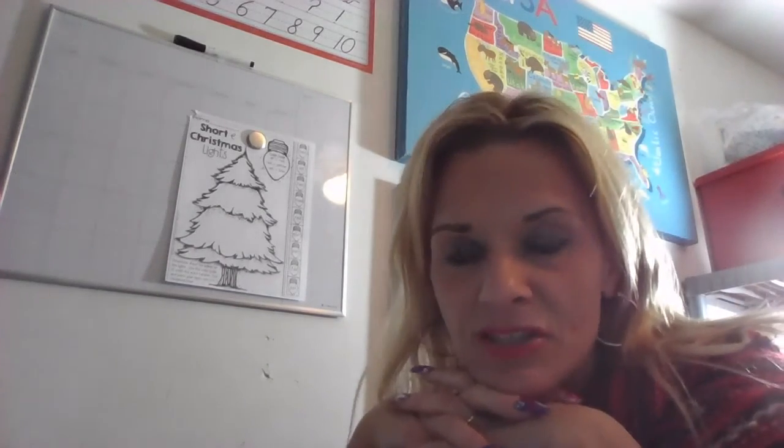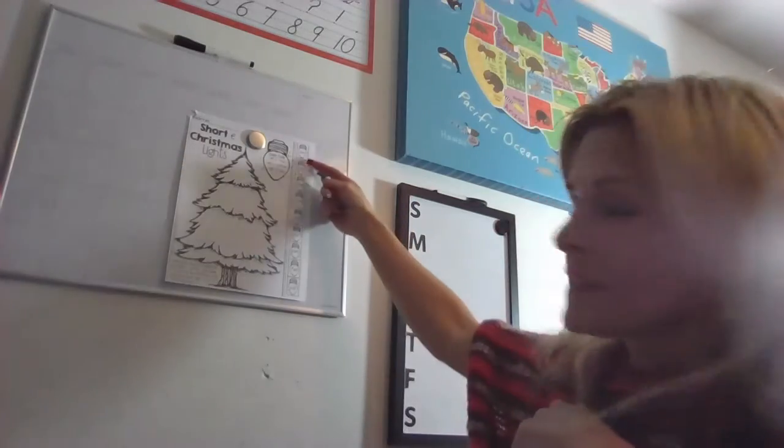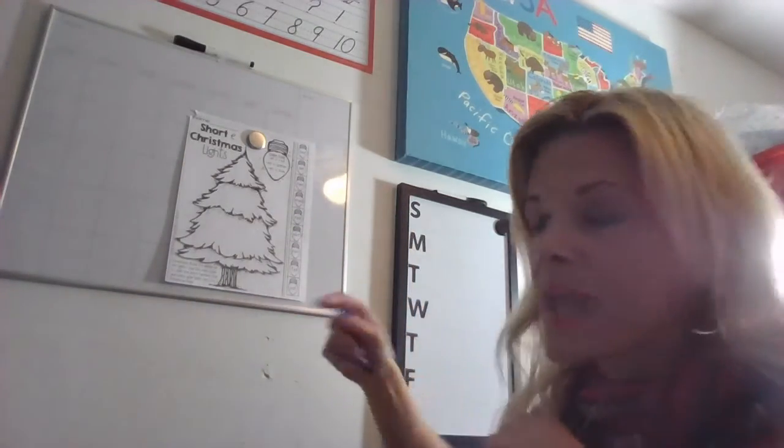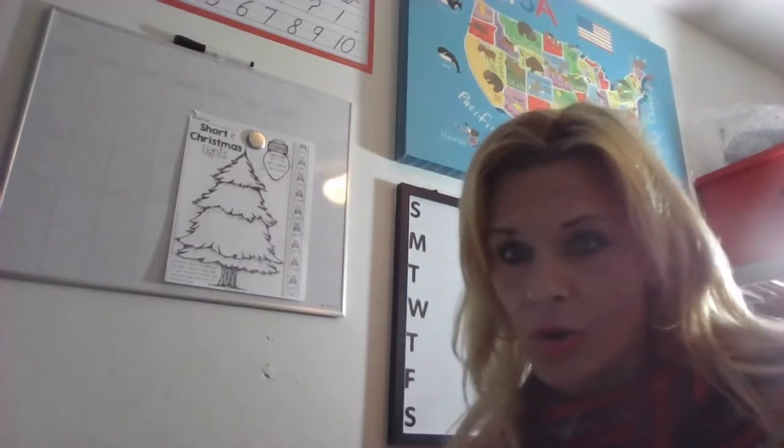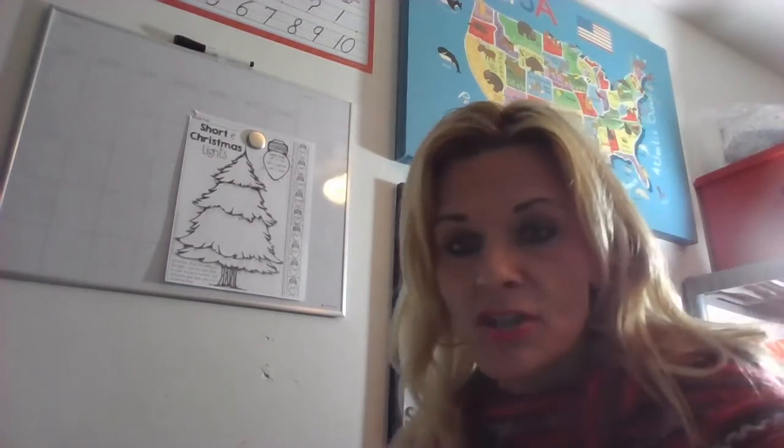Ready? Let's make the short E sound — eh, eh. A lot of times we like to say the word Eskimo because we can hear the short E at the beginning. Well, today our short E words are going to be in word families. So we're going to look at these light bulbs on the side and use our color code to know which word family they belong to.